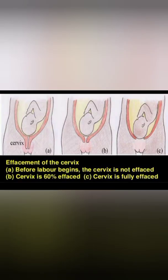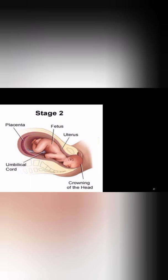In the diagrams shown, figure A illustrates the cervix before labor — not effaced. Figure B shows the cervix 60% effaced, and figure C shows fully effaced cervix. Effacement is the process by which the muscular fibers of the cervix are pulled upward and merge with the fibers of the lower uterine segment. In a primigravida, effacement occurs before dilatation; in a multipara, both occur simultaneously. Expulsion of the mucous plug is caused by effacement.